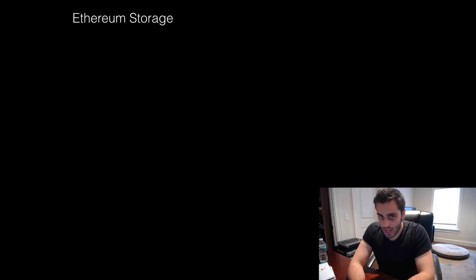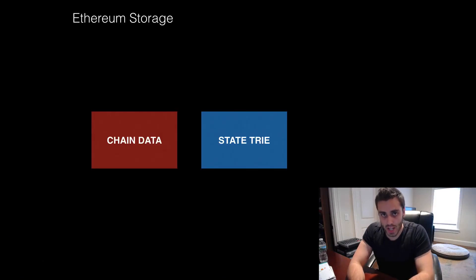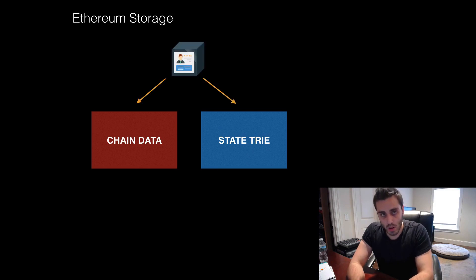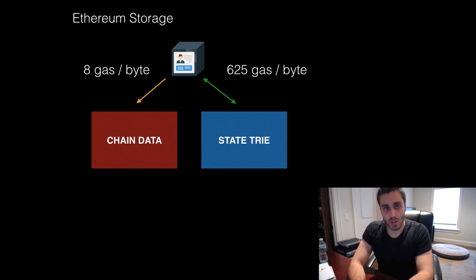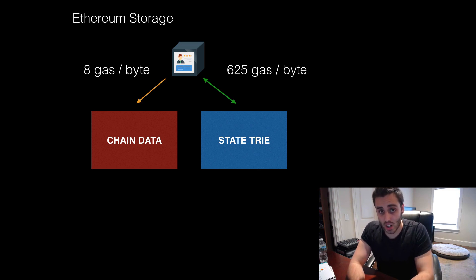Without going down too big of a black hole here, there are two places where you store data in Ethereum: in chain data and the state tree. Smart contracts can write to both chain data and state, but they can only read from state. So why would you ever have a smart contract write data somewhere where it can't read it from? Well, first and foremost is the pricing — writing to chain data costs 8 gas per byte, whereas writing to state costs 625 gas per byte.